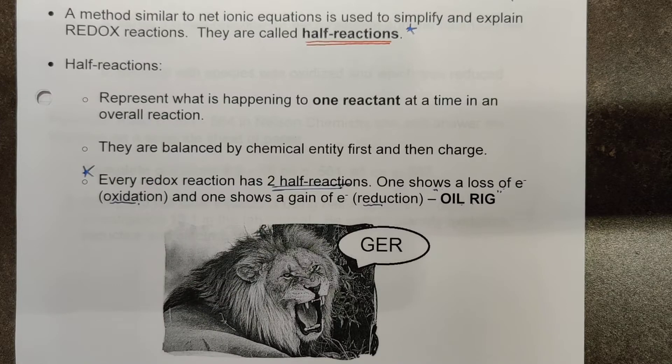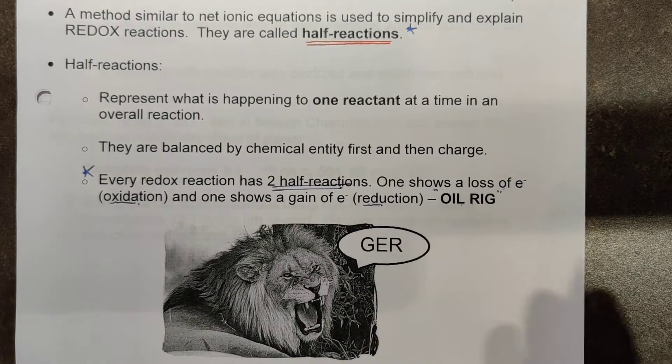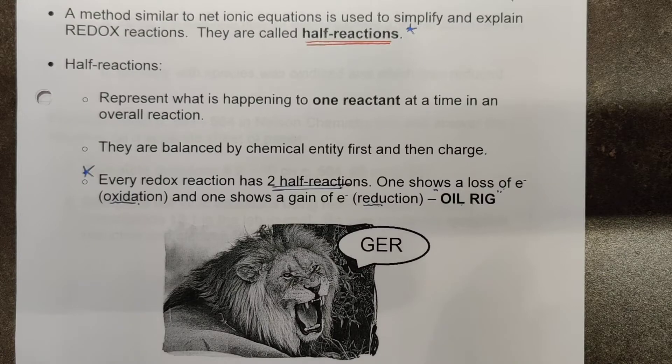My old chemistry teacher liked Leo the lion says ger, where Leo means losing electrons is oxidation. And ger, or what the lion is saying here, is just gaining electrons is reduction. So again, it's just the same thing we've been talking about for the last two lessons, and just maybe an easy way to remember it. So if one of those mnemonics work for you, go for it, use it. Anything to make this easier is a good thing.